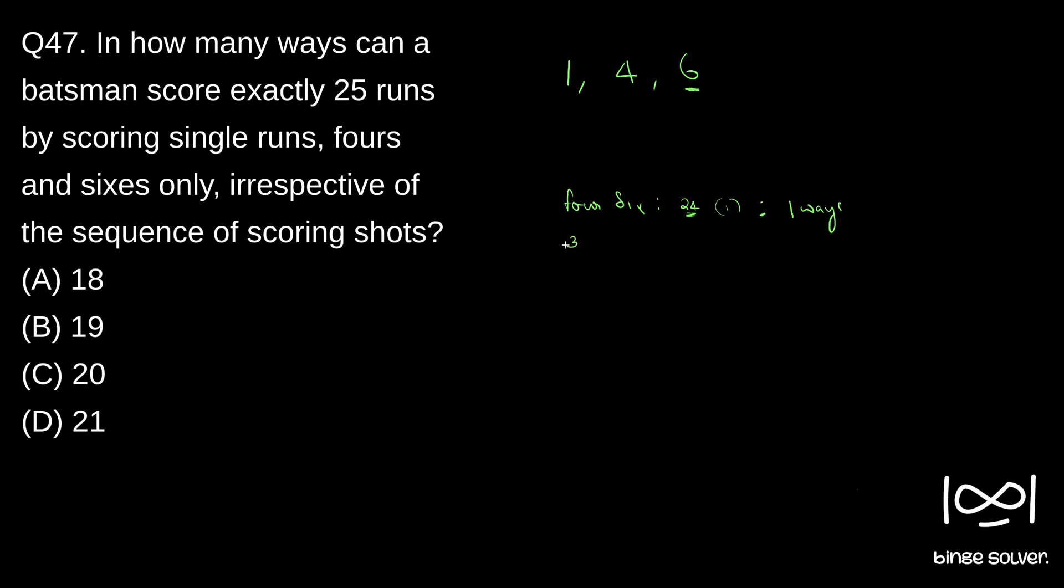Similarly, say if he scored 5 sixes, it would have been greater than 25, so that is not possible. So similarly, if he scores 3 sixes, he will get 18 runs. Now that is left is 25. He needs 7 more runs. How many ways he can score 7 runs using 1 and 4? So we will see that.